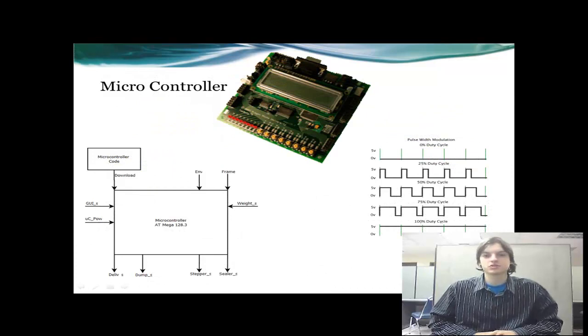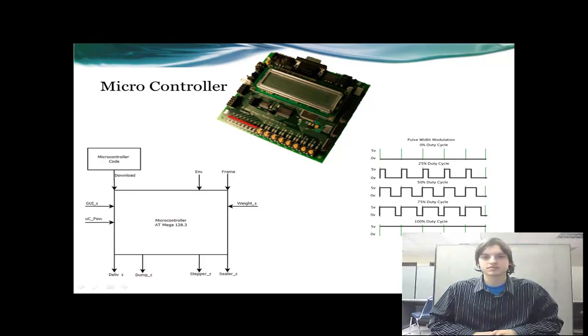The microcontroller receives a total weight needed per bag and a start command from the graphical user interface. Once the microcontroller has this information, a PWM signal is sent out to the vibration motor for max RPM. As parts fall from the delivery system to the counting system, the current weight is fed back to the microcontroller. As the weight increases towards the total value desired, the microcontroller slows the vibration motor to add accuracy to the counting system. Once the max weight is reached, the vibration is turned off and a positioned PWM is sent to the servo in the counting system to dump parts into the bag. Once the parts are inside the bag, a PWM is sent out to the stepper motor controlling bag motion. The bags are rolled forward until they are in position to be sealed. A PWM signal is sent out to the servo controlling the sealer. The sealer closes for 2 seconds and reopens. The bag roll is then reversed enough for the next bag to open.